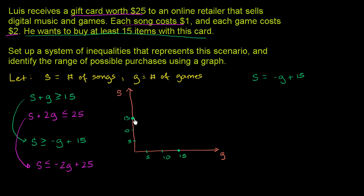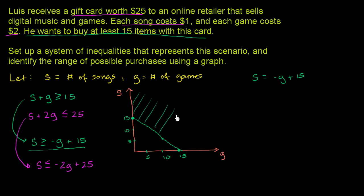It's not just the boundary line — s plus g has to be greater than or equal to 15, or s is greater than or equal to negative g plus 15. So for any g, we want all s values above the boundary line. You can verify this: the point (0, 0) doesn't work since 0 plus 0 is not greater than or equal to 15. But (15, 15) gives 30, which is greater than or equal to 15. So the valid region is the entire area above this line.